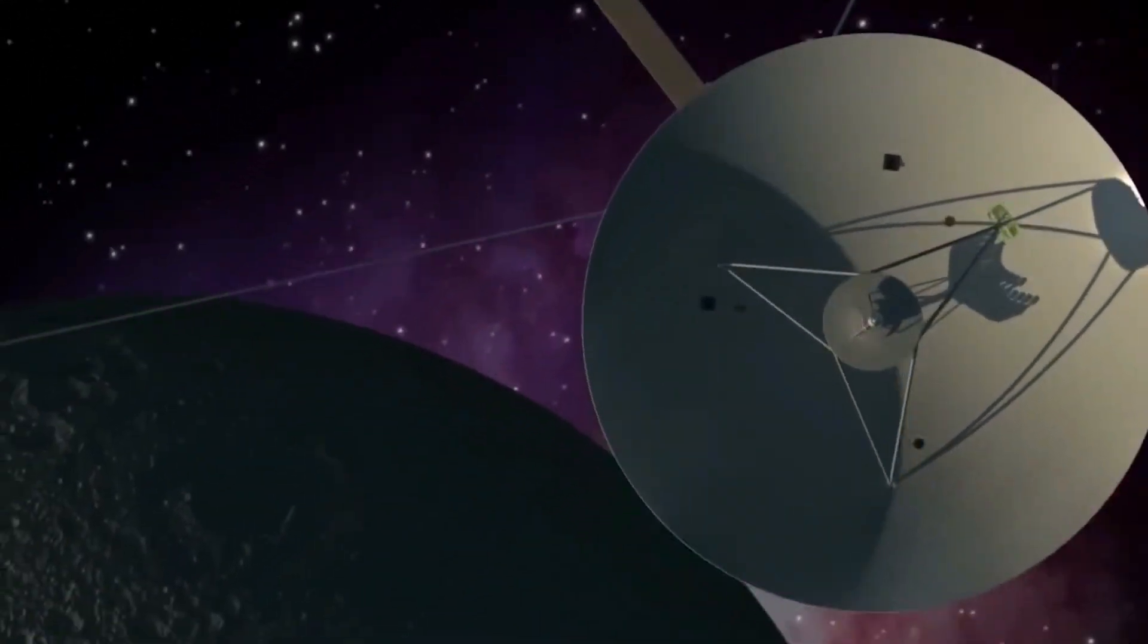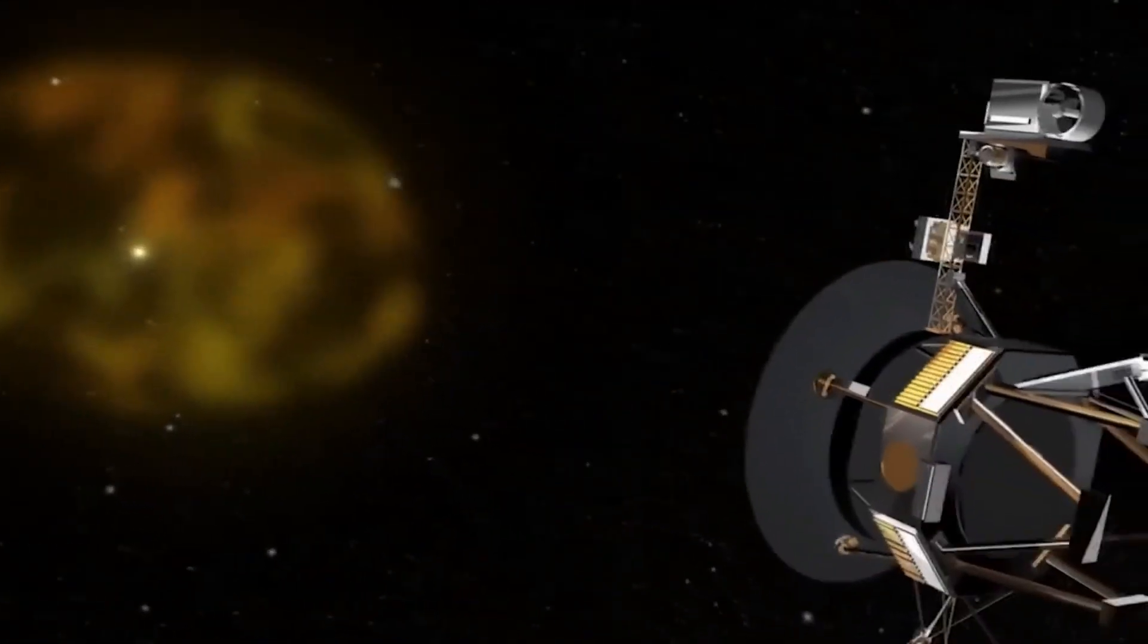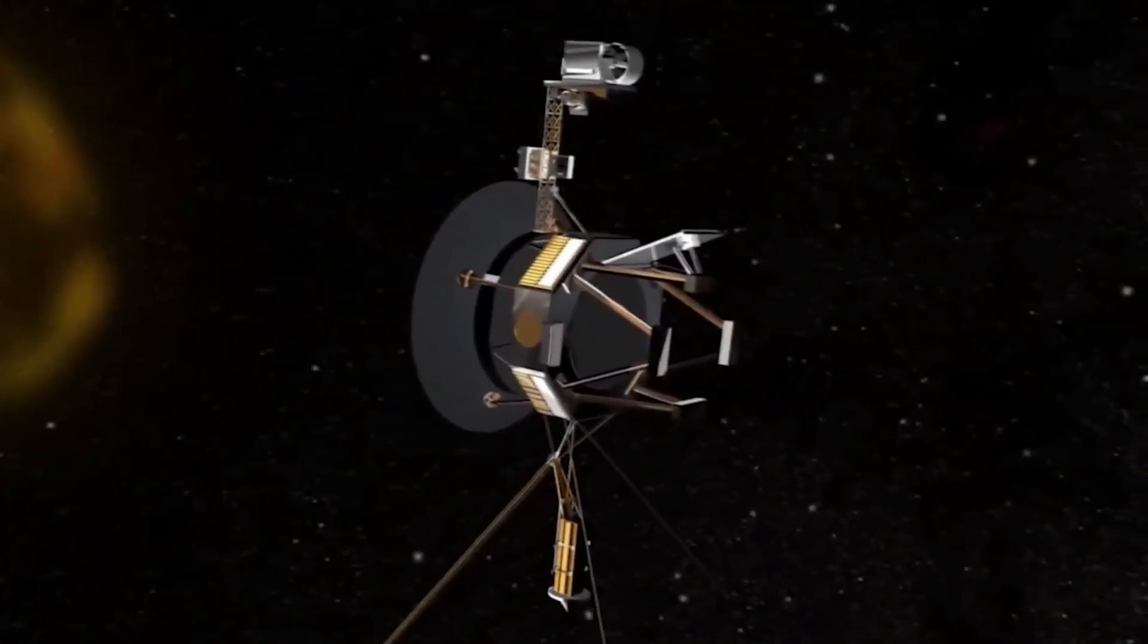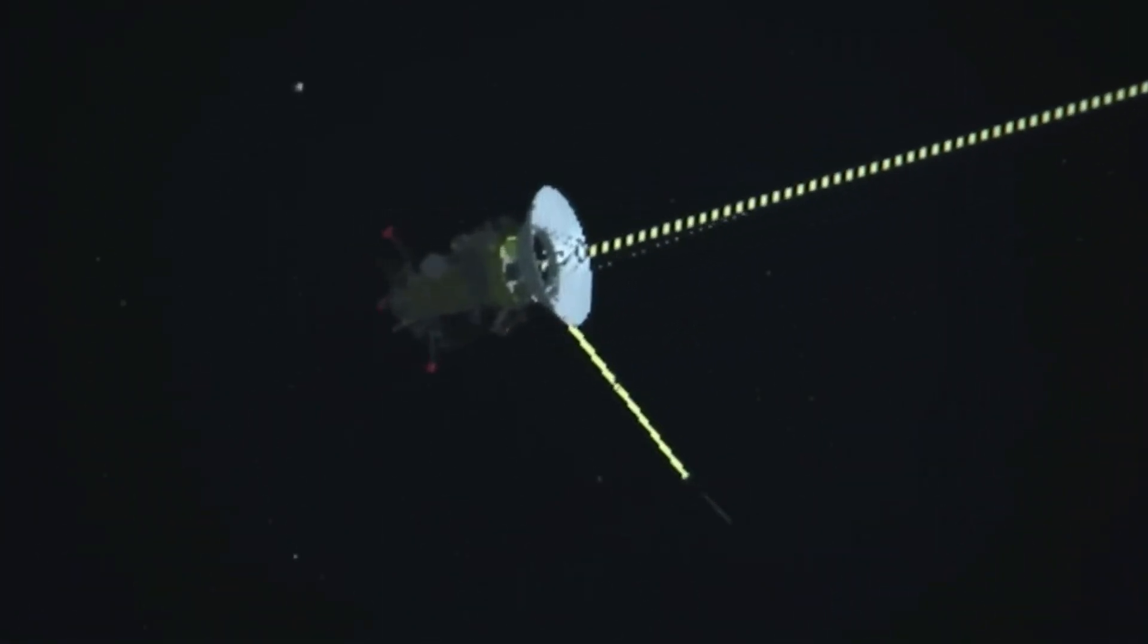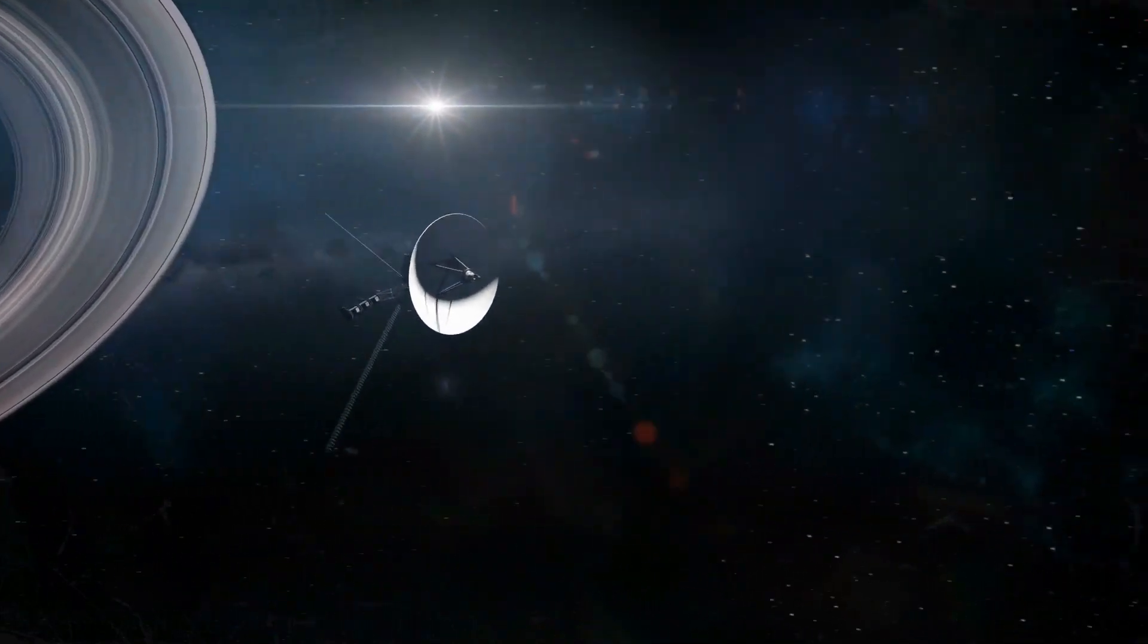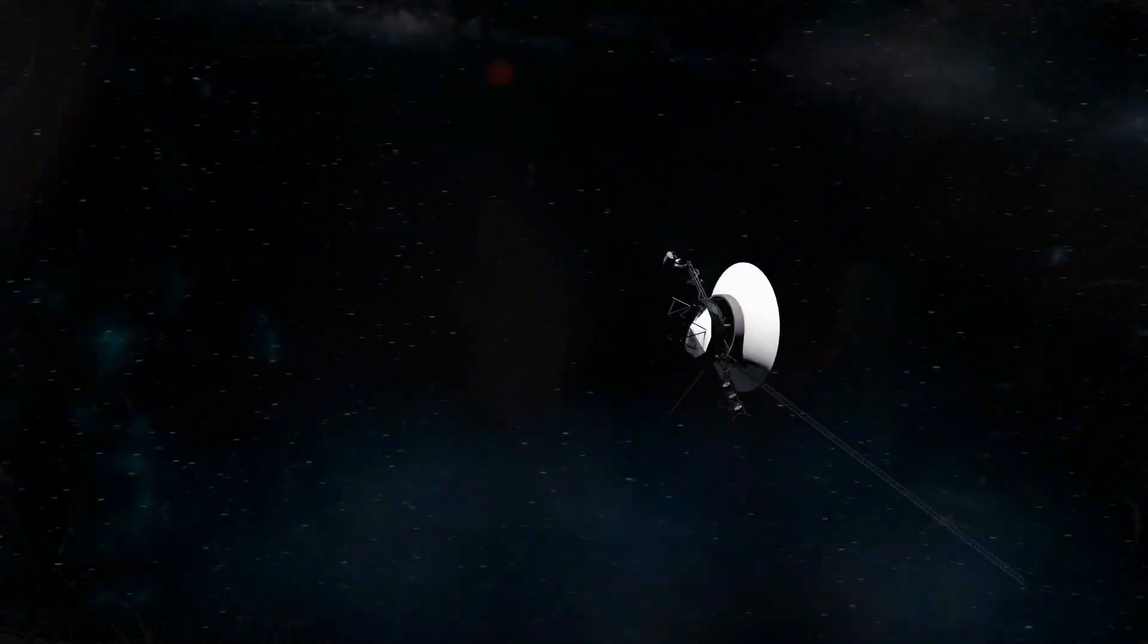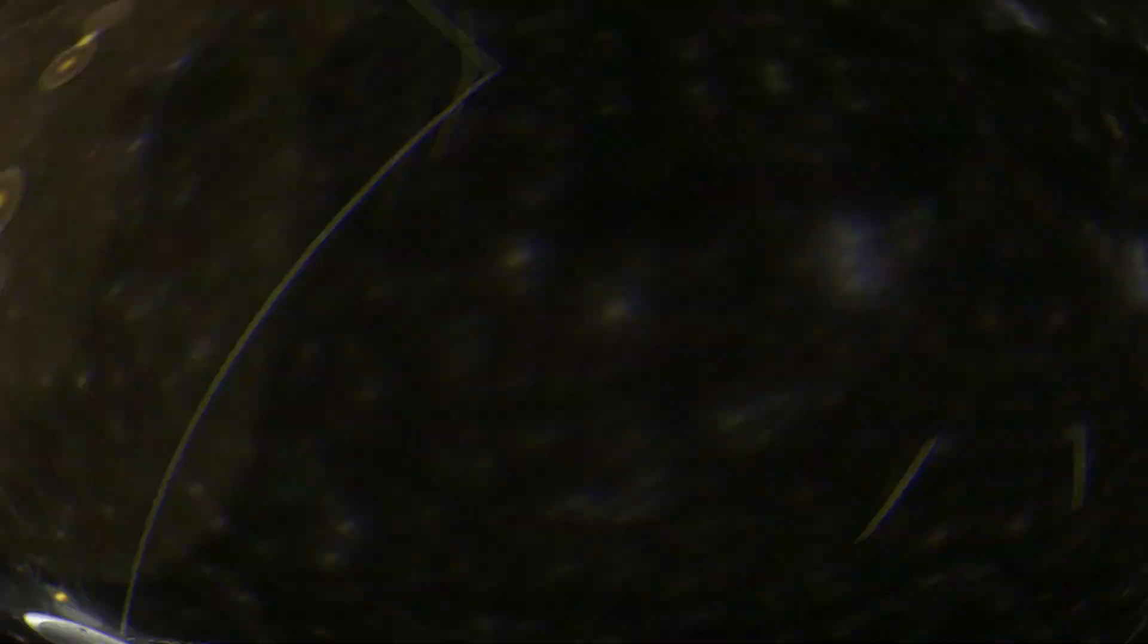NASA's Voyager mission project manager says that this is pretty normal for a spacecraft as old as Voyager 1. Even when it was in the same condition, it's never sent these unreadable signals before. So why is the spaceship sending these signals now when it's so far from Earth? It's been in space for more than 45 years and is now a record 23.6 billion kilometers or 157.9 astronomical units away from the Sun.